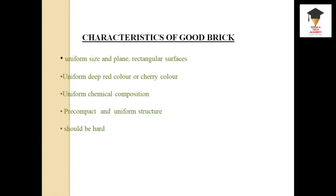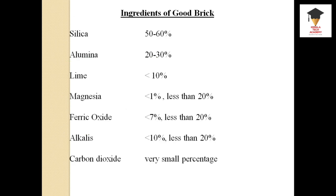Next is a very important portion - the ingredients of a good brick. Silica, alumina, lime, magnesia, ferric oxide, alkalis, and carbon dioxide are all present in a good brick. The ingredient that imparts plasticity to a brick is alumina.